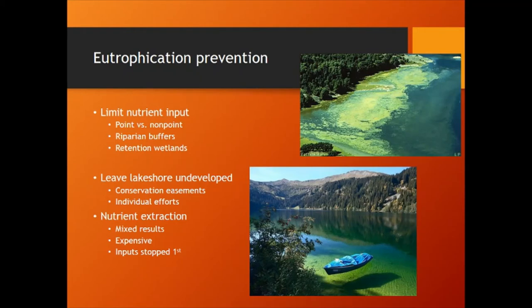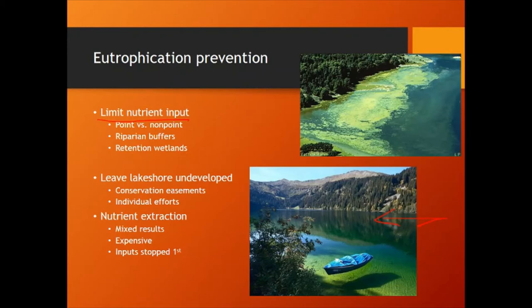How do you prevent eutrophication? Nobody wants their lake to look like that — everybody wants it to be clear. The first thing you need to do is stop nutrient input. Without stopping nutrient input, nothing else is going to work. This means keeping riparian buffers intact, limiting point and non-point sources of nutrient runoff, keeping the natural wetlands around a lake that hold nutrients and eat them up before they get into the lake. Basically, leaving as much of the lake shore undeveloped as possible. We can think about conservation easements or individual efforts like my uncle did with his lake property.